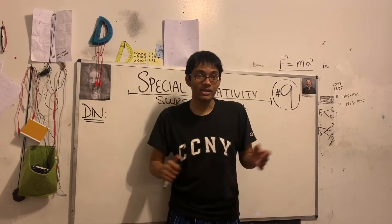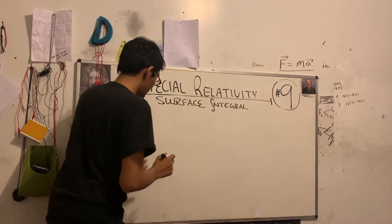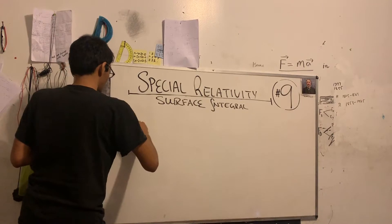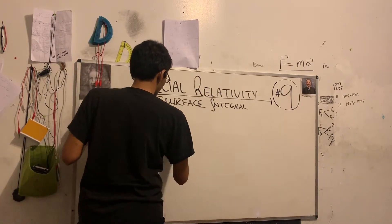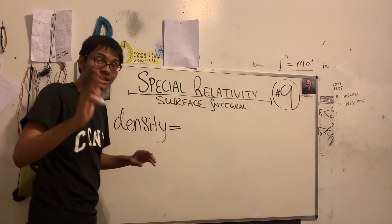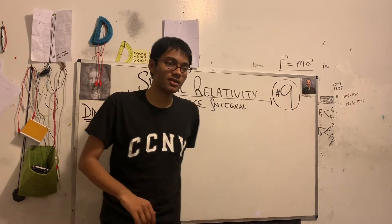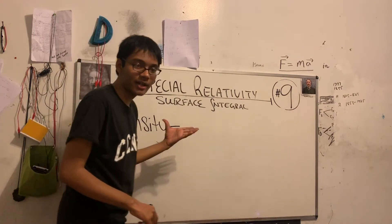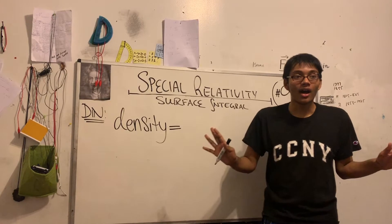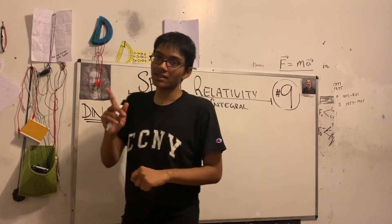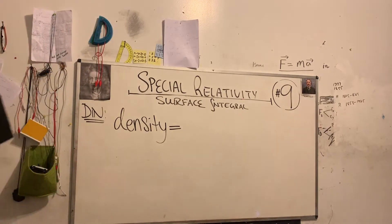For our do now, I want you to do something very simple, which is identify the equation for density. Hint, it involves a rational fraction. So go ahead and write down the equation for density, and although this might seem off topic, we'll see the connection to the surface integral in just a moment.